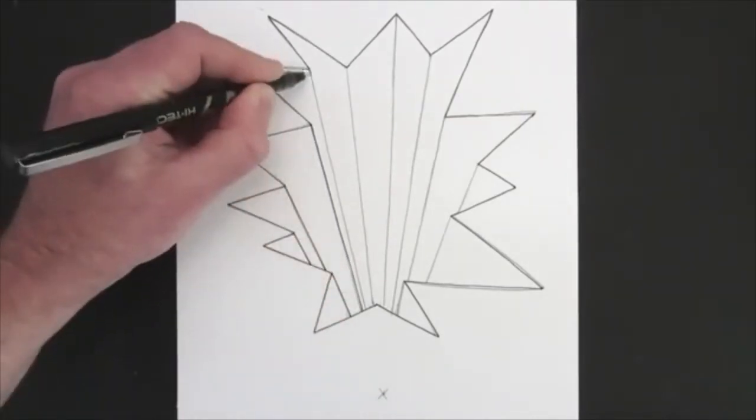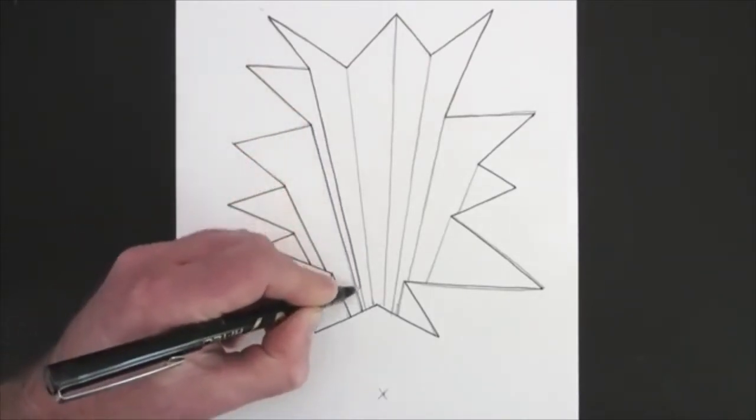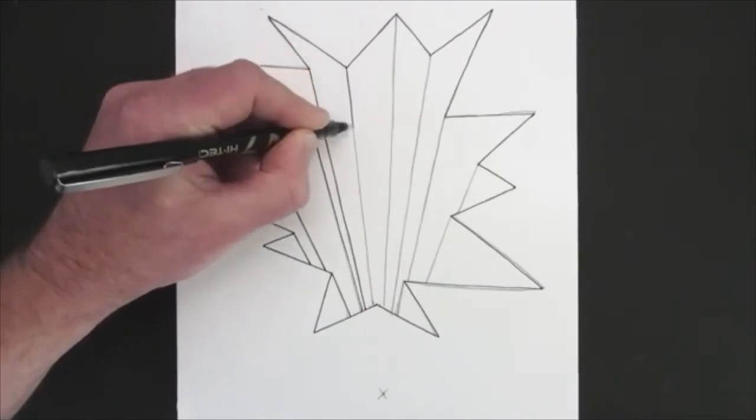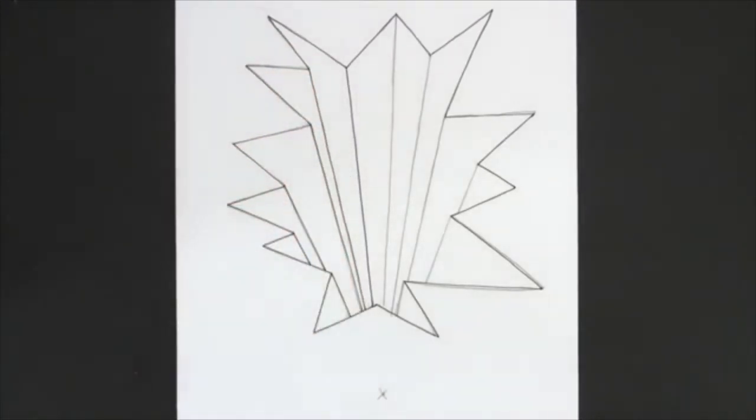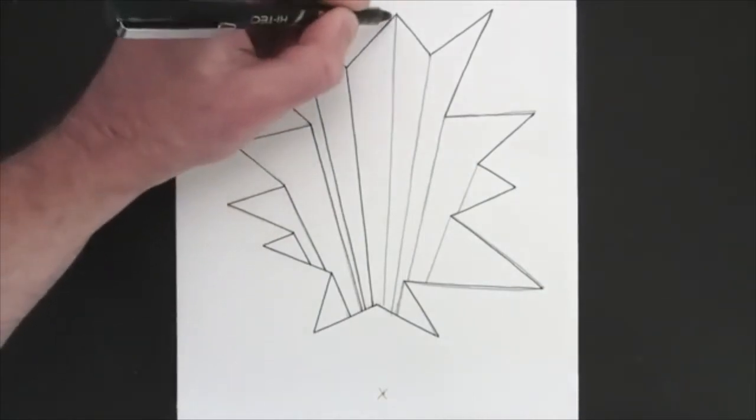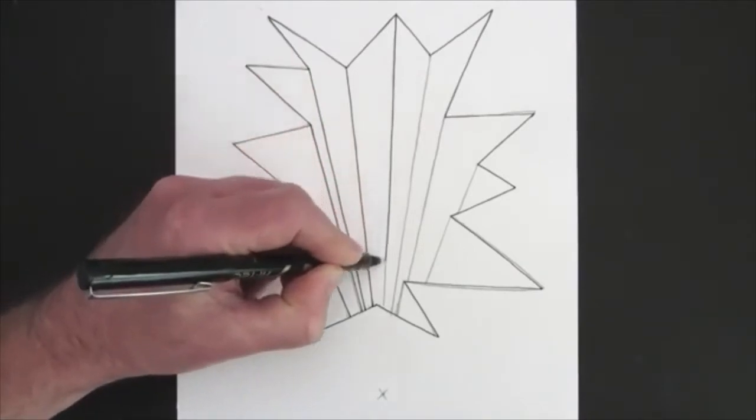But the next stage that we need to do is to shade in various shapes with different tones, and for that I'm going to use some Letraset Promarker pens which have various shades of grey, but you could use pencils - 2B, 4B pencils would be great for this as well. So I just need to finish going over all the pencil lines with a black pen first of all before I put in the tone.